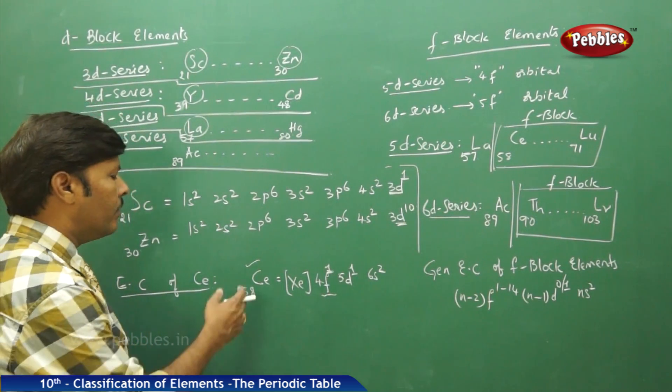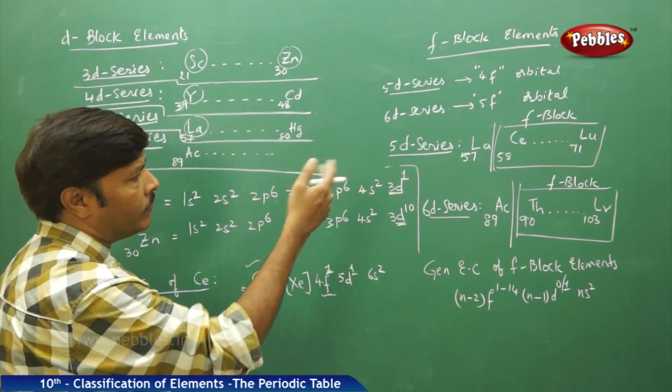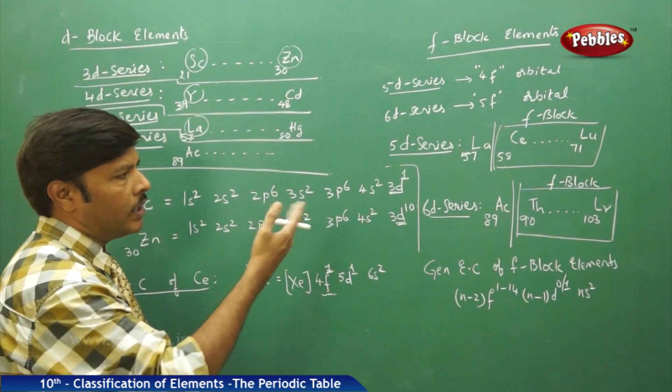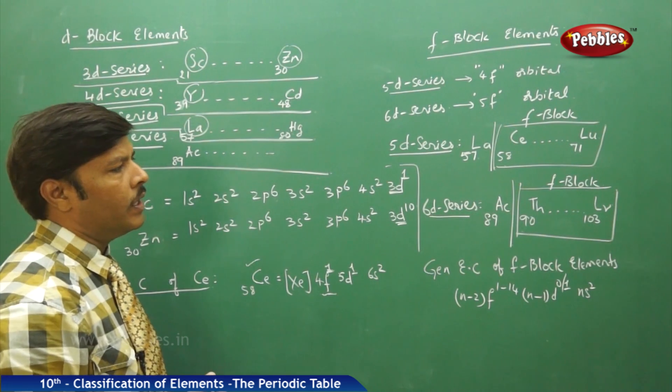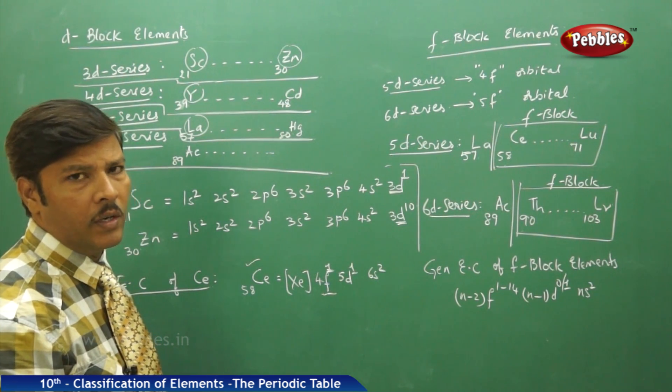Likewise, you can write the electronic configuration for lutetium, thorium, and lawrencium to verify their block membership.